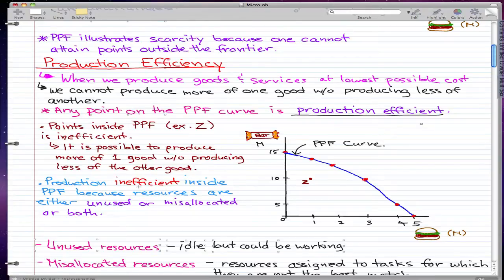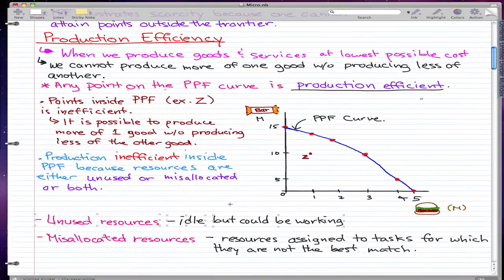Now, production is inefficient inside the PPF because resources are either unused or misallocated, or they could be both. Resources are unused when they are idle but could be working. That's the definition of unused resources.